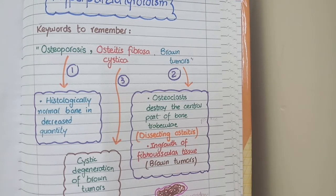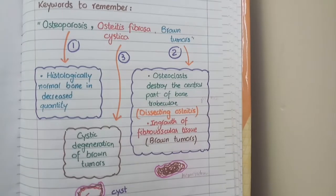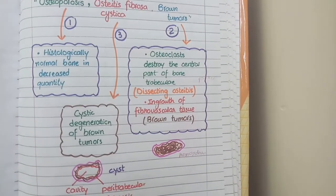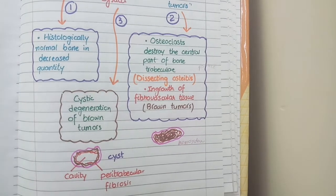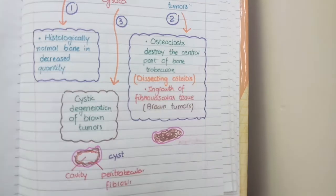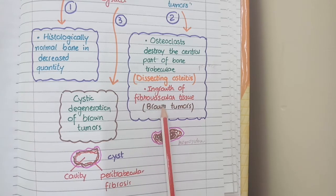As a repair mechanism, fibrovascular tissue starts proliferating in the dissected regions. This growth of fibrovascular tissue in the places where previously there was degradation by osteoclasts is called brown tumors. Brown tumors are masses of fibrovascular tissue formed where osteoclasts previously caused degradation. They appear brown because of the hemosiderin derived from macrophages, which play an important role in the ingrowth of this fibrovascular tissue.